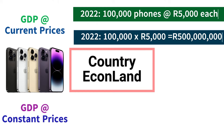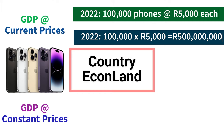GDP at constant prices, also known as real GDP, is a measure that adjusts for the impact of inflation or deflation by using a fixed or base year's prices. This method allows for a more accurate comparison of economic output across different years because it eliminates the influence of changing price levels.